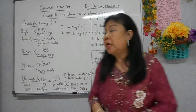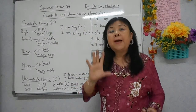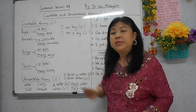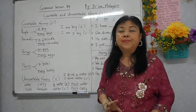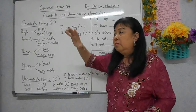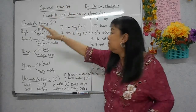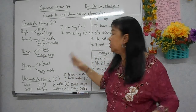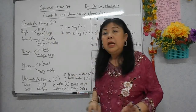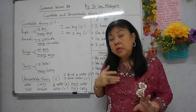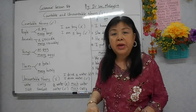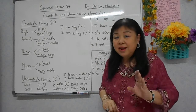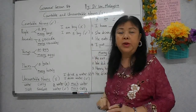Hari ini kita belajar countable and uncountable nouns. Countable noun ialah orang, binatang, tempat, dan benda yang boleh kira. Contoh, people - orang. Kategori orang ini di bawahnya ialah boy, girl, teacher, husband, doktor, dan sebagainya. Kalau saya sebut seorang lelaki, maka saya mesti gunakan 'a boy'. Saya tidak boleh cakap 'I am boy' - salah. Mesti 'I am a boy' - baru betul.